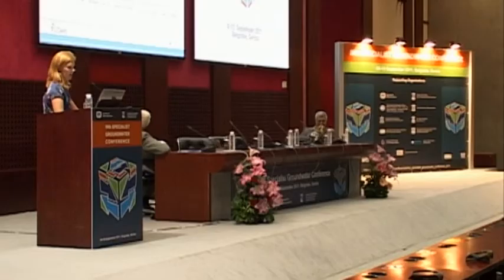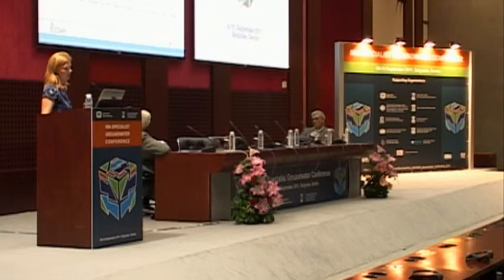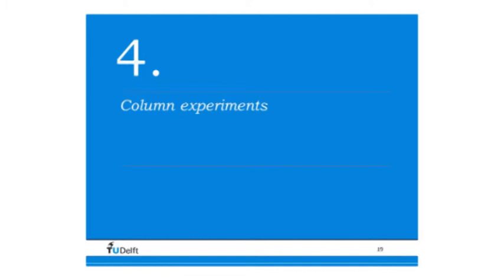Does it clog? In practice, it does not — in fact it clogs less than a normal well. The graphs from the same site show drawdown on the vertical axis and time on the horizontal axis. Two normal wells show increasing drawdown over time, indicating increasing resistance requiring well rehabilitation. The subsurface iron removal well stays remarkably stable. Operators still clean it occasionally because they worry it should be getting clogged. One theory for better performance is that clogging is reversed: particles that normally accumulate near the production well are pushed back into the aquifer with each monthly injection.